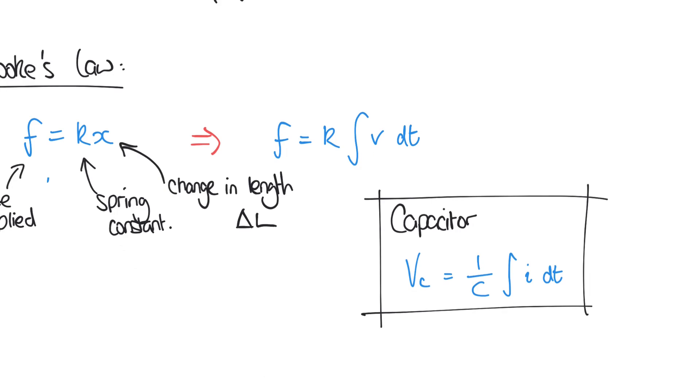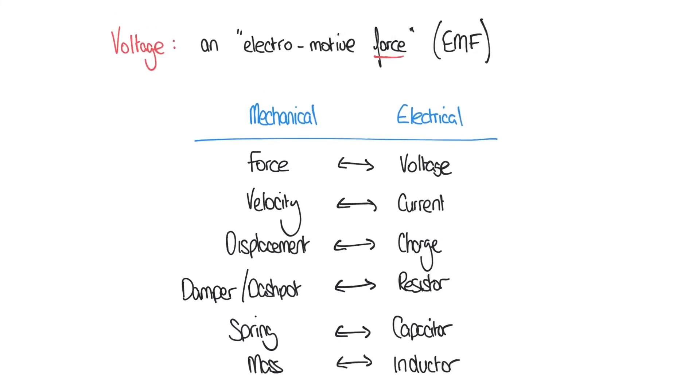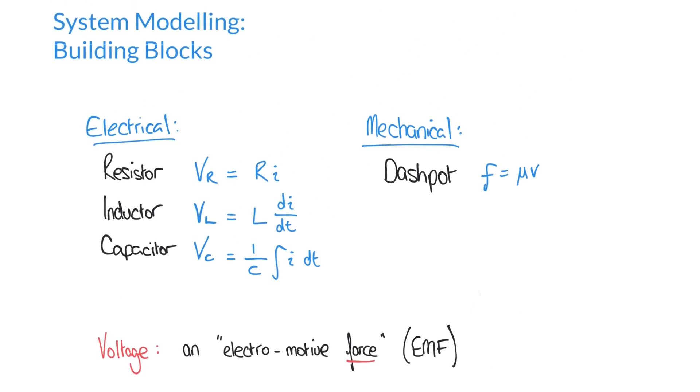This time we also see that the spring constant K is now analogous to 1 over C. So let's summarize our findings by putting these all in a table here, what we've seen.